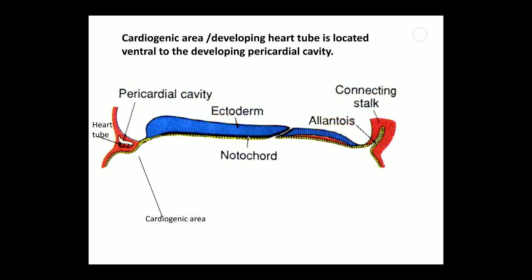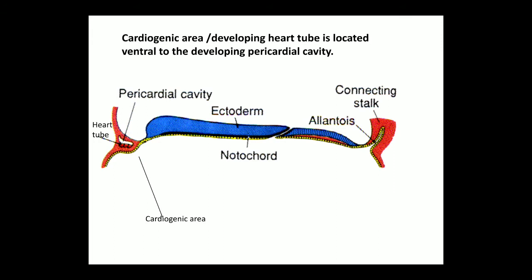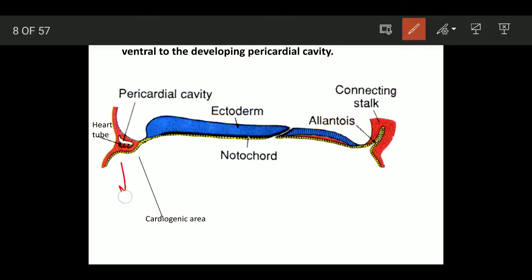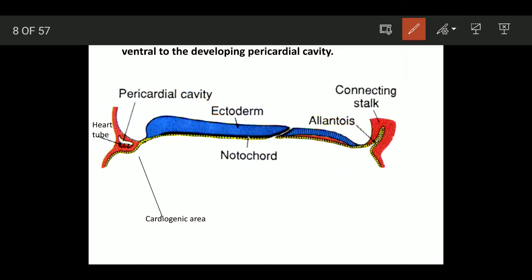Here you can see the cranial and the caudal end of the embryo. At the cranial end you can see the heart tube and the pericardial cavity. This diagram shows the arrangement before head folding — before head folding this heart tube lies in the floor of the pericardial cavity, but after folding this heart tube will lie in the roof of the pericardial cavity.